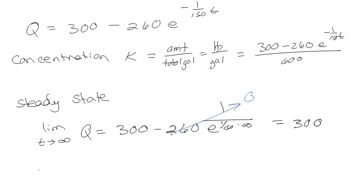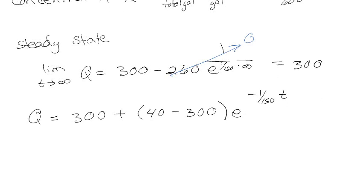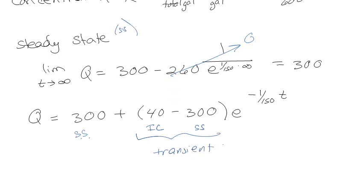What's amazing about this is the pattern: I have the steady state, and then I have my initial condition minus my steady state times the exponential. I see that transient response — the same pattern keeps coming up again and again. Whenever I solve problems like this, I have an initial condition and a steady state. At any given time, the amount of salt in the system is the steady state plus (initial condition minus steady state) times e to the time constant.